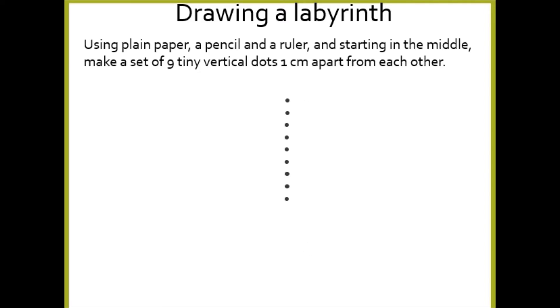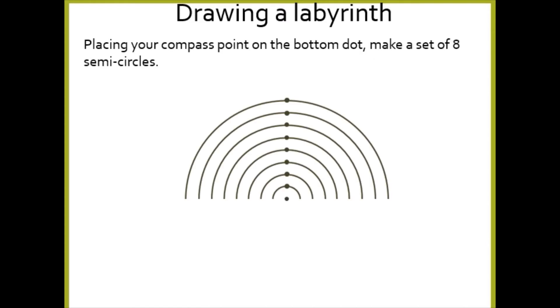Then I'm going to put my compass here on the bottom dot, and with my compass there I'm going to extend my pencil to make a set of eight semicircles that go through my points that I made. So my compass is here, I draw one little semicircle here, two, three, all the way up to eight.